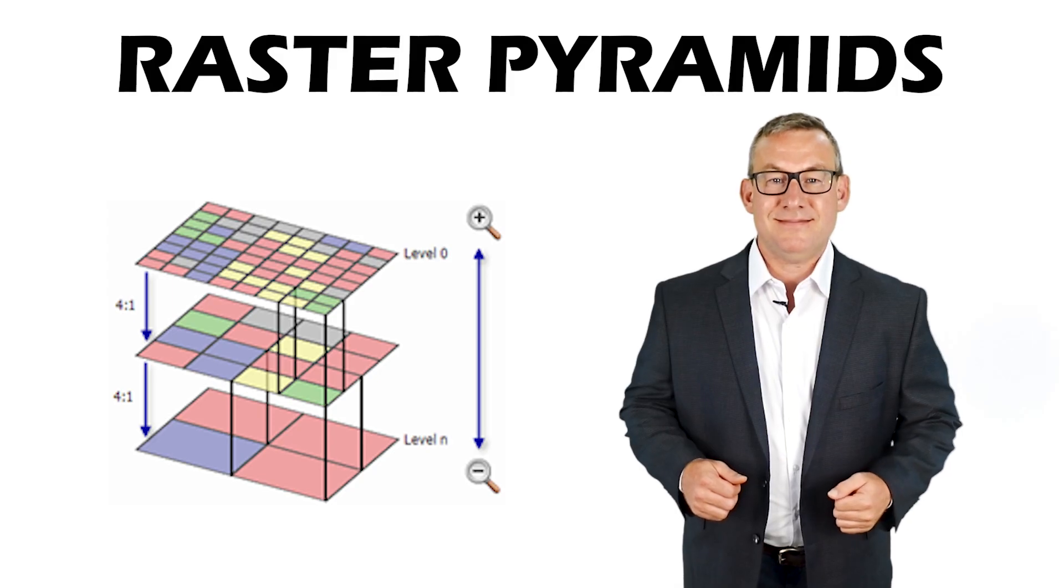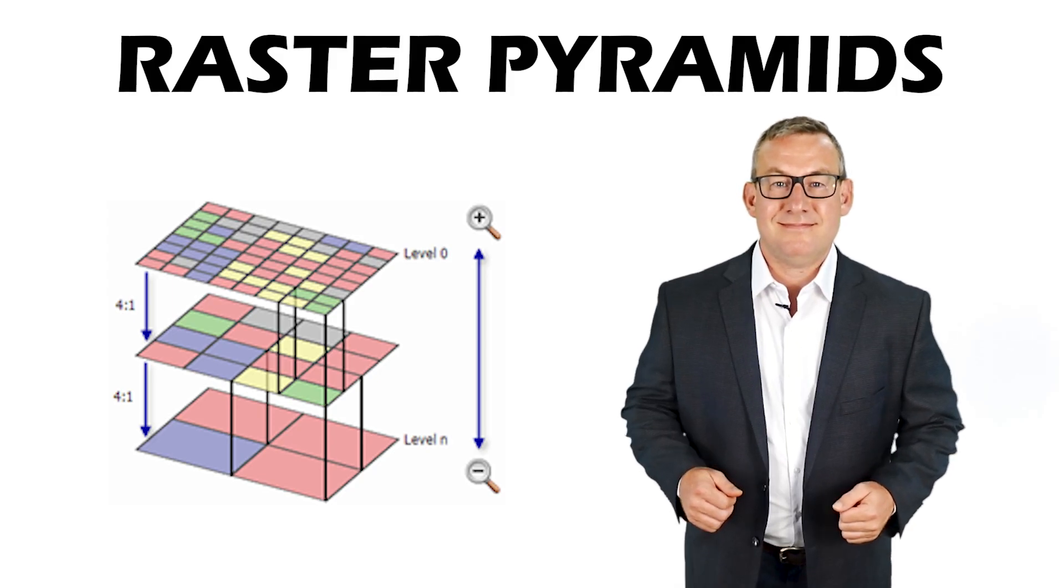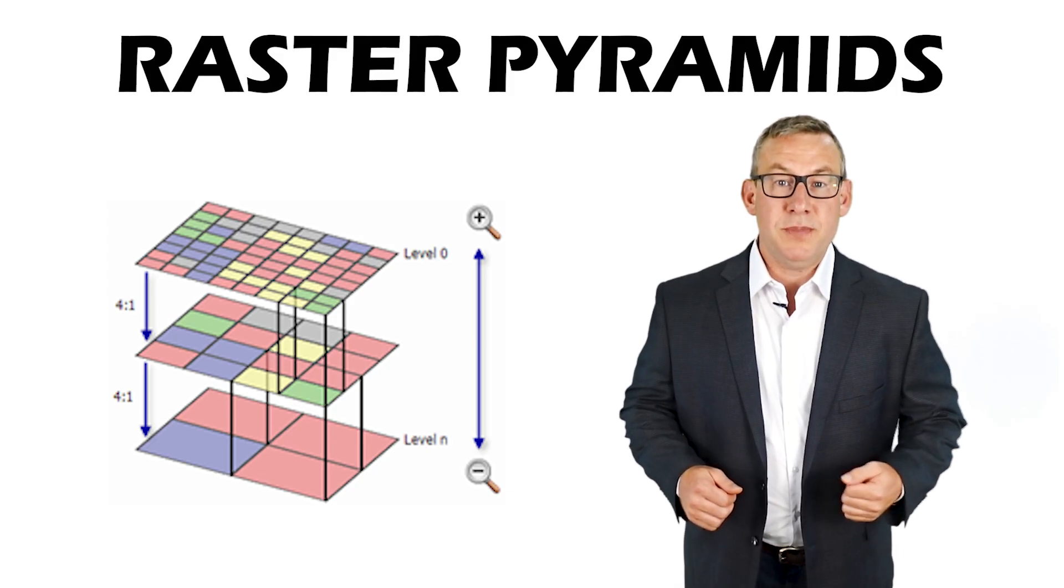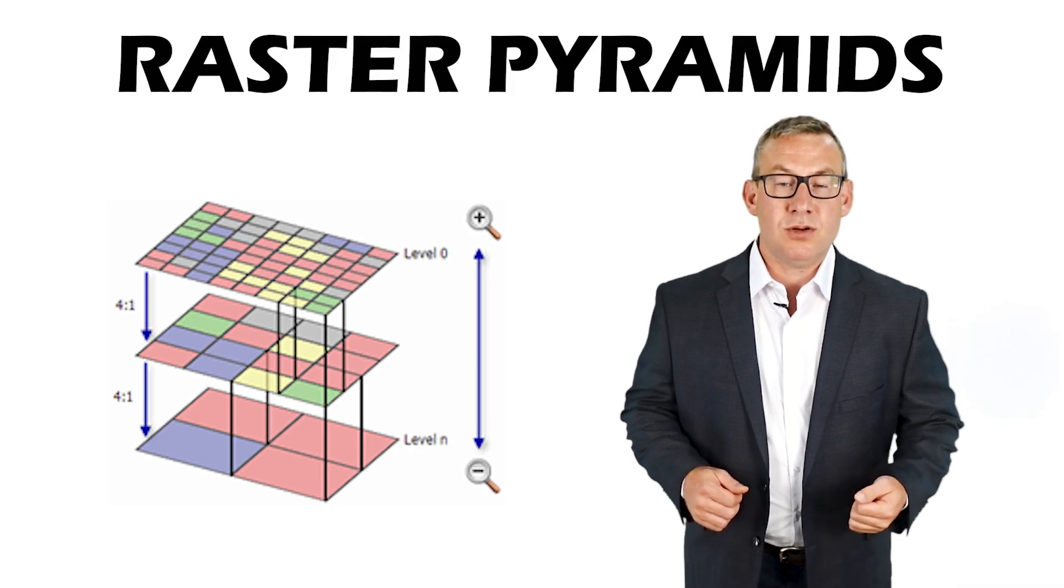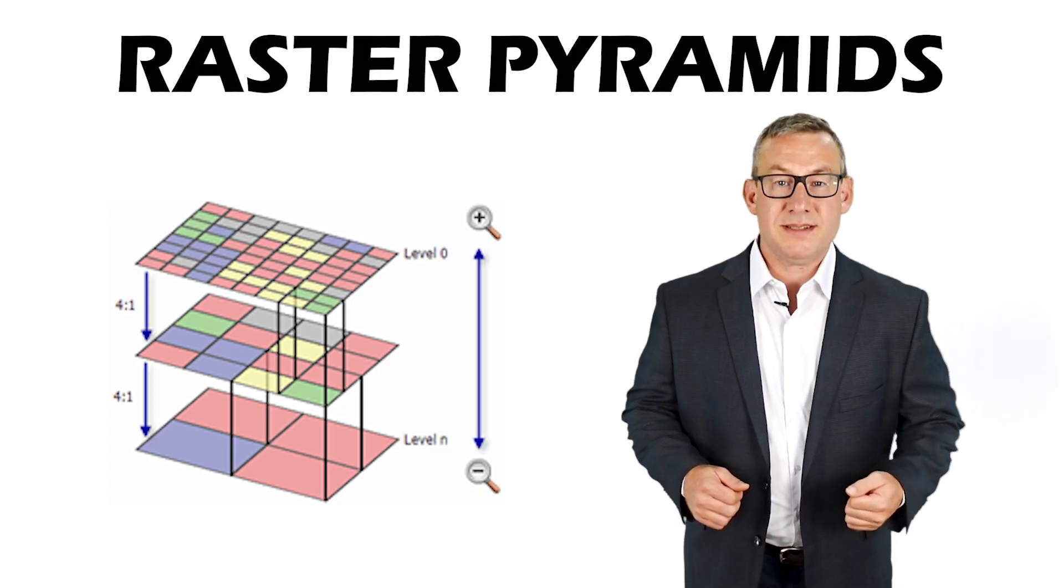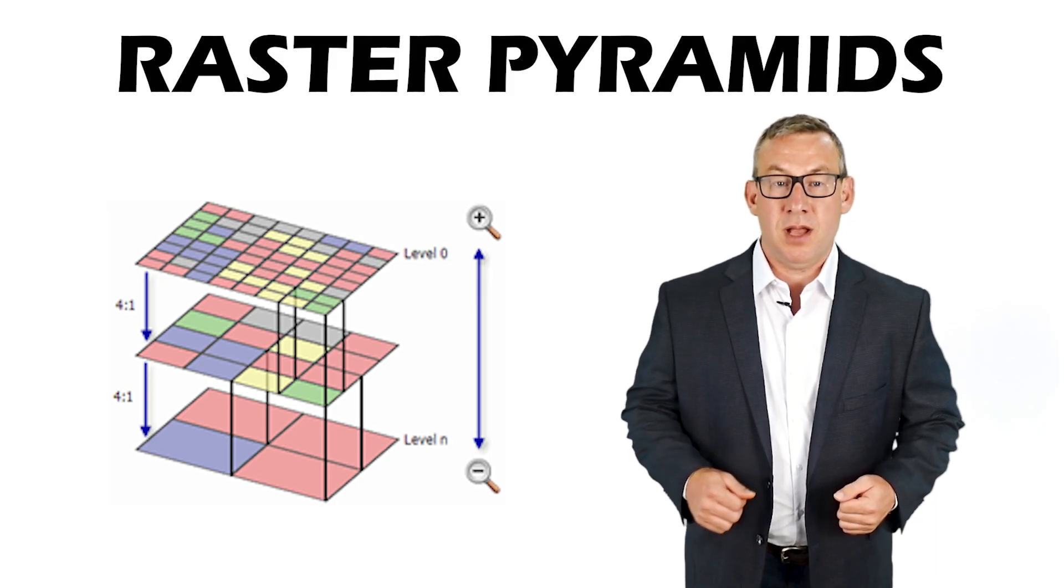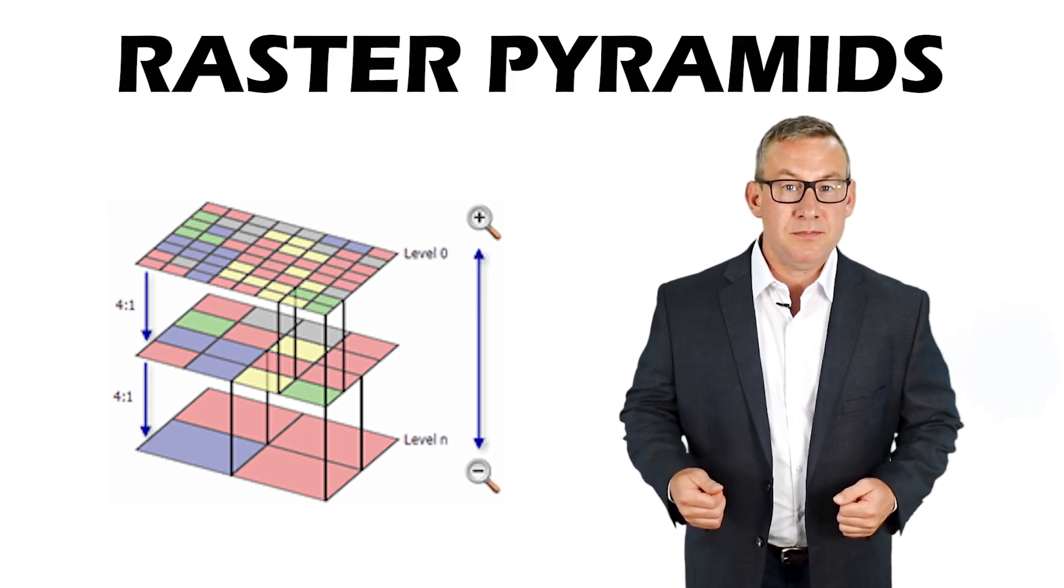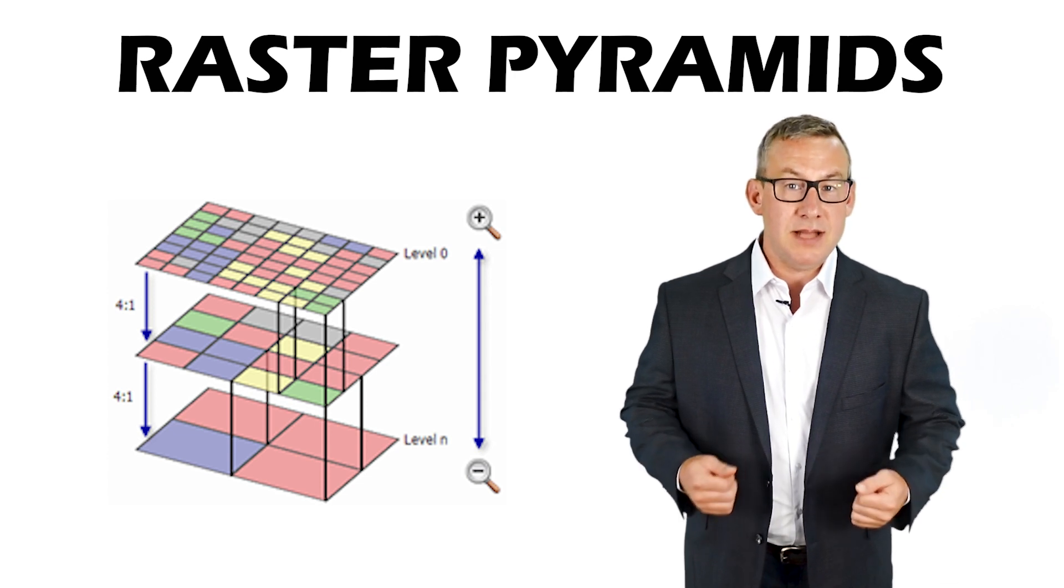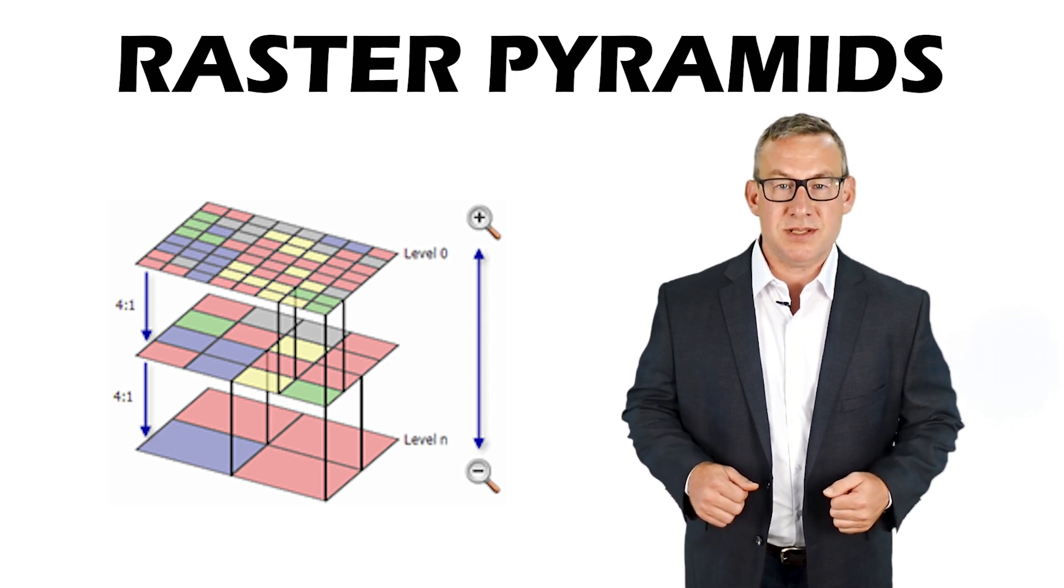Raster pyramids generalize a raster to improve display performance. They are a downsampled version of the original raster dataset and can contain many downsampled layers at different scales.